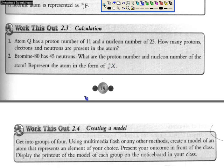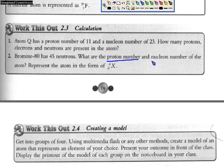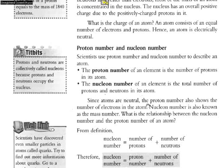Before we do this question, we have to know the meaning of proton number as well as nucleon number. If you look at page 18, the proton number is defined as the number of protons in its atom. The nucleon number of an element is the total number of protons and neutrons in its atom.